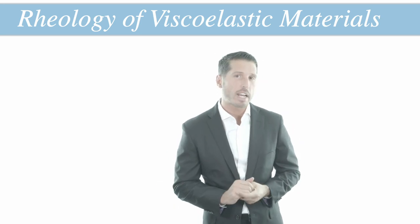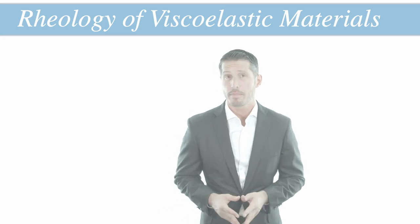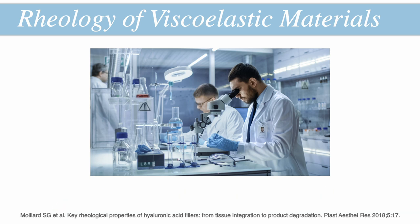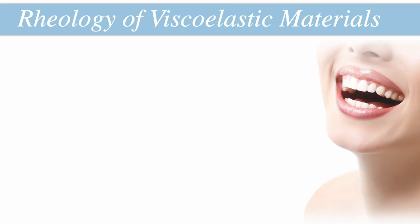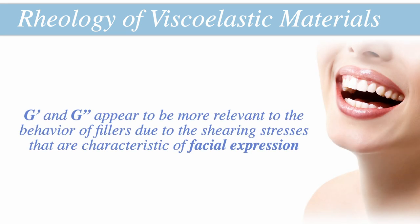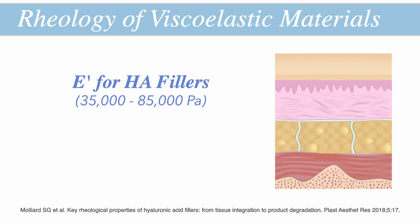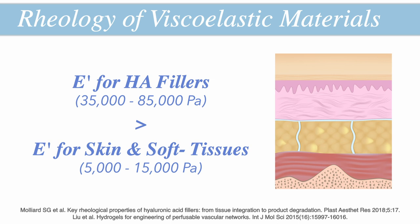Now you may be wondering: how come we use the values of G prime and G double-prime so often in describing the behavior of hyaluronic acid fillers, but rarely ever hear about E prime and E double-prime? In reality, the compressive storage and loss moduli E prime and E double-prime do appear to play a useful role in describing some in vitro differences between fillers of different brands. However, within the soft tissue framework of the face, the shearing properties G prime and G double-prime appear to be much more relevant to the behavior of fillers, due to the high shearing stresses characteristic of facial expression. In addition, because all fillers will have a much higher resistance to compression — E prime — in the relatively soft environment of facial soft tissues, the normal elastic moduli of E prime and E double-prime don't appear to be as valuable in explaining the behavior of fillers in vivo.